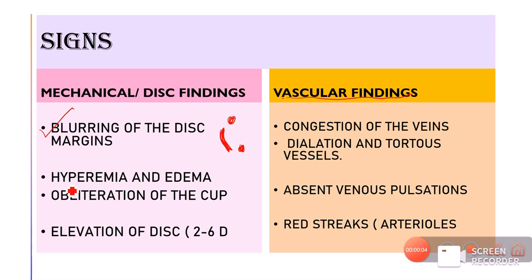The next sign is hyperemia and edema of the optic nerve head. Hyperemia — increased redness of the disc — occurs because compression of the central retinal vein reduces blood flow, causing back-congestion. Since blood is not draining back into the veins, the optic disc looks hyperemic and redder in color. Similarly, the disc looks bigger due to axoplasmic stasis. So there will be hyperemia and edema of the disc.